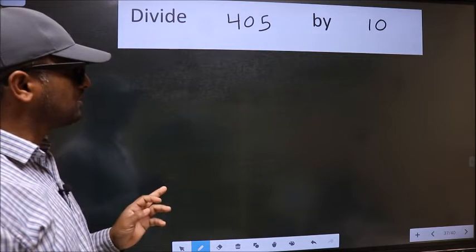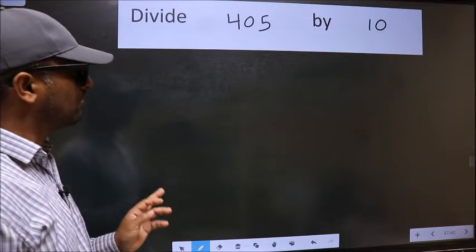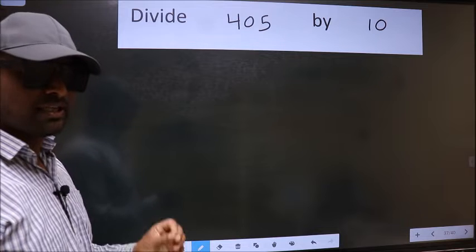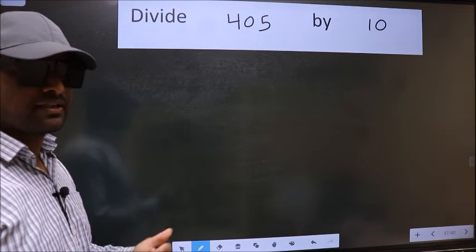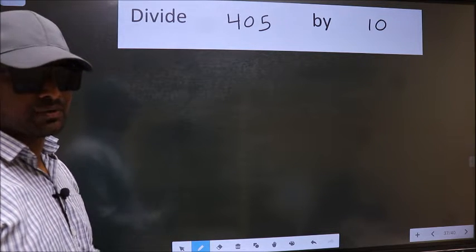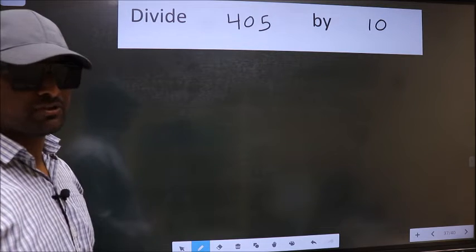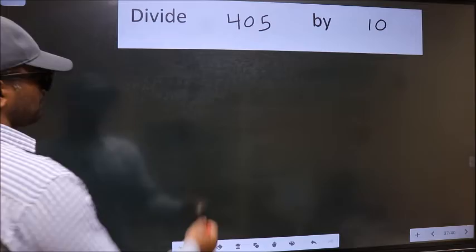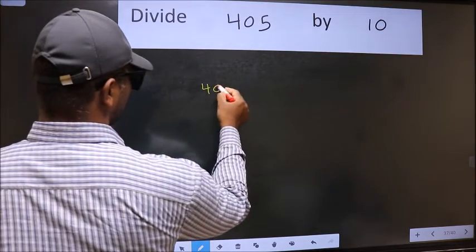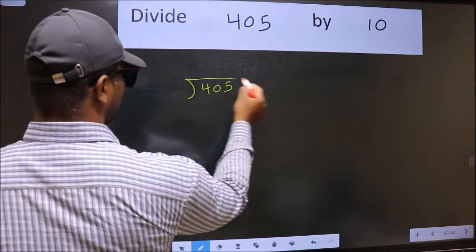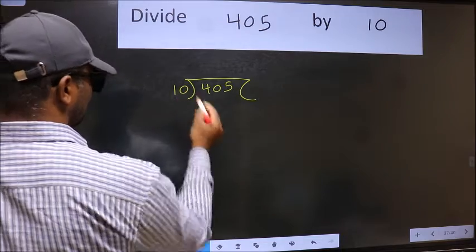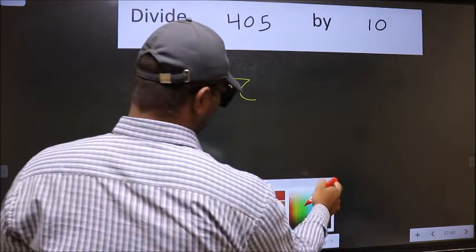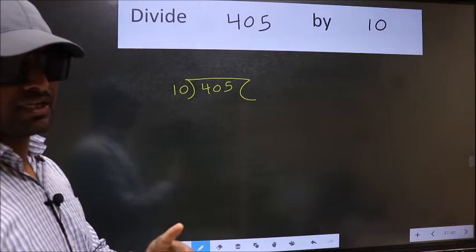Divide 405 by 10. While doing this division, many do this mistake. What is the mistake that they do? I will let you know. But before that, we should frame it in this way. 405 and 10 here. This is your step 1.